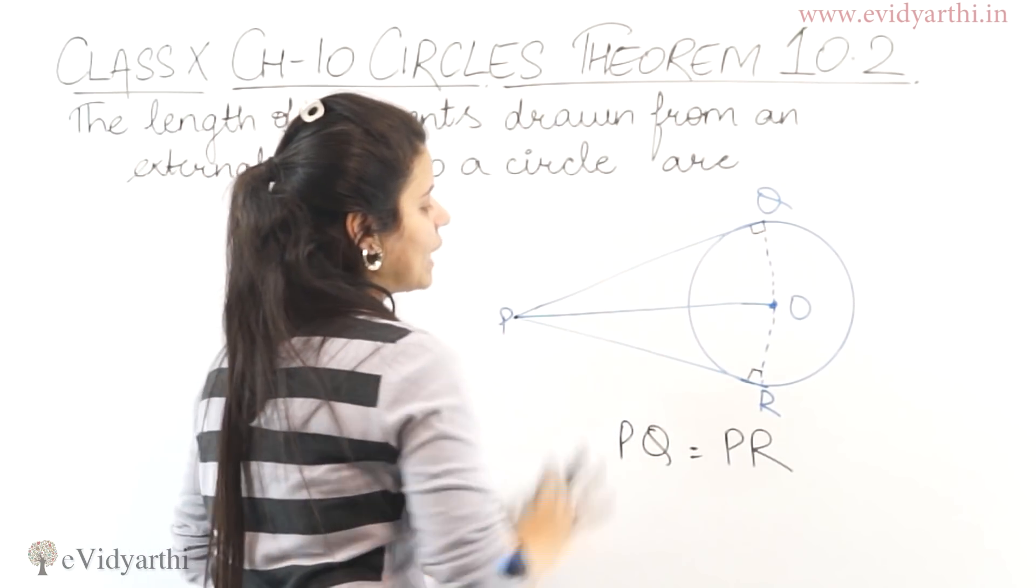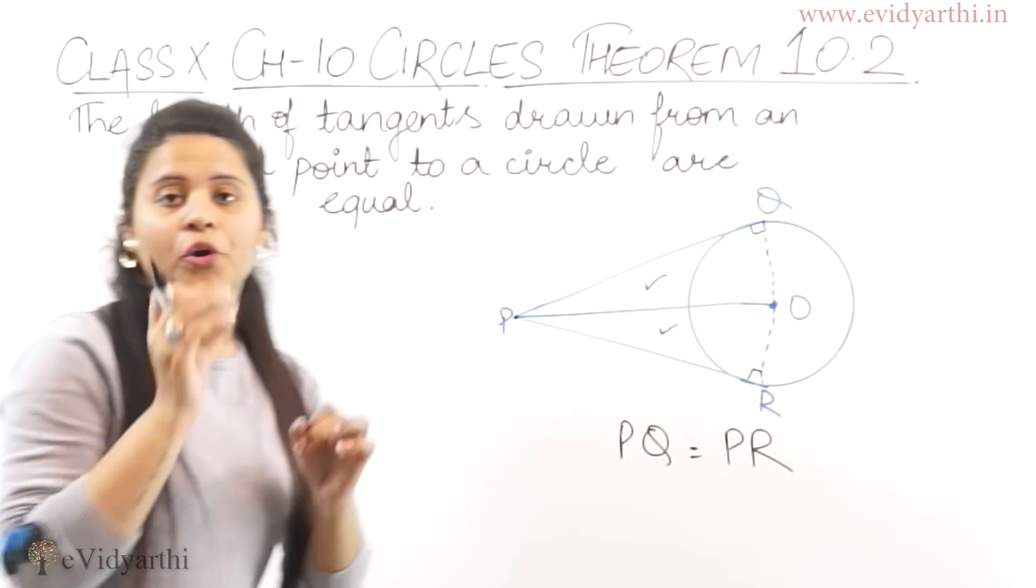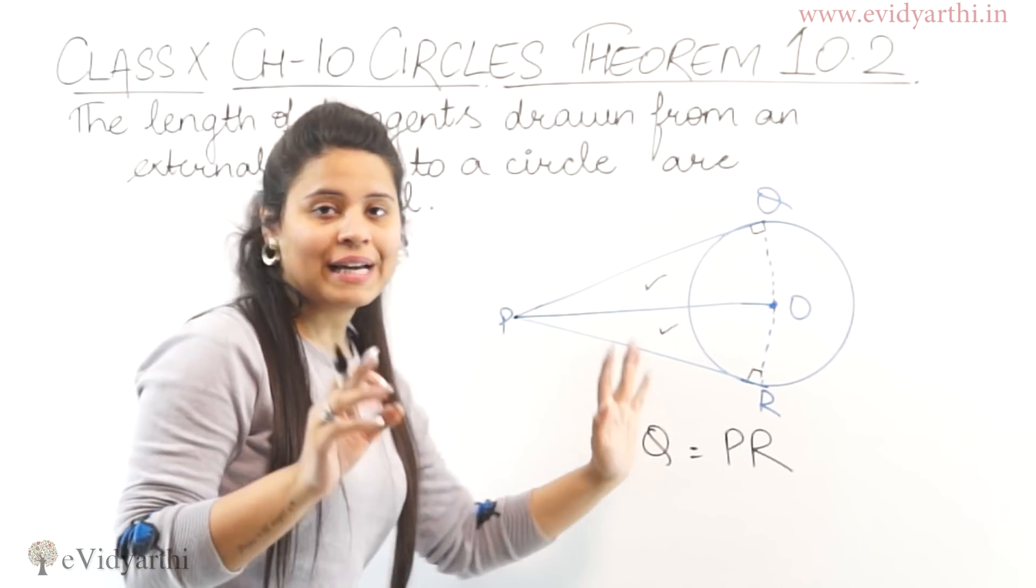Now we have to prove PQ and PR are equal. So simply, if we prove these triangles congruent, then we can do CPCT.